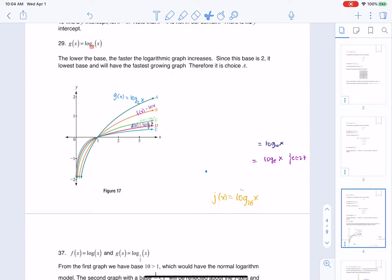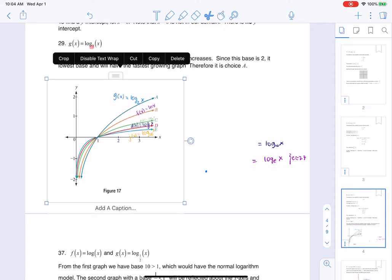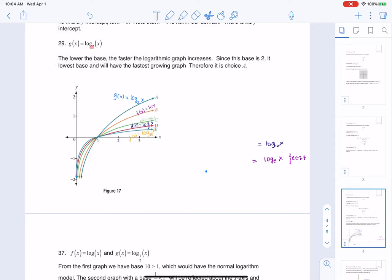and then last but not least, we have J of X, which is log base 25, that is the largest number, so that's going to go in there, so the answer specifically for 29 is that we're going with the graph on A, but that's how you could play all of these out, so the lower the base, the faster the logarithmic growth. Thanks so much everyone, bye.